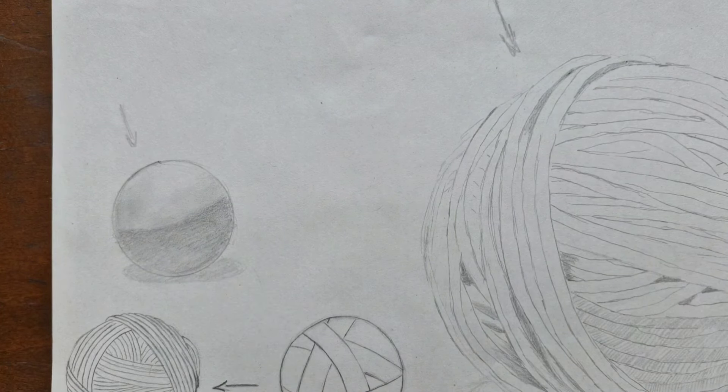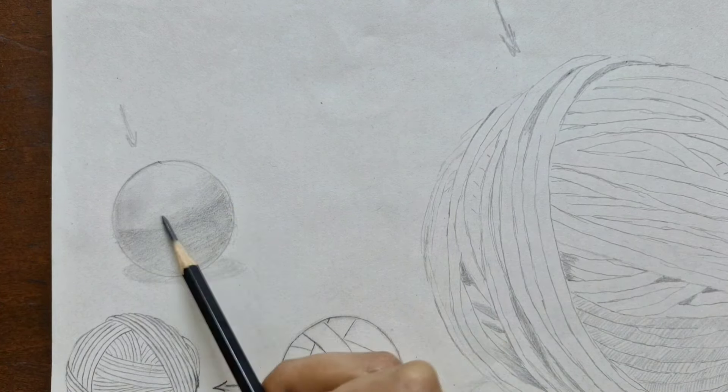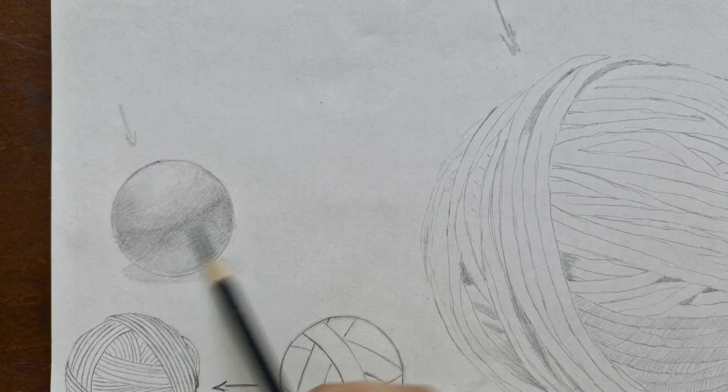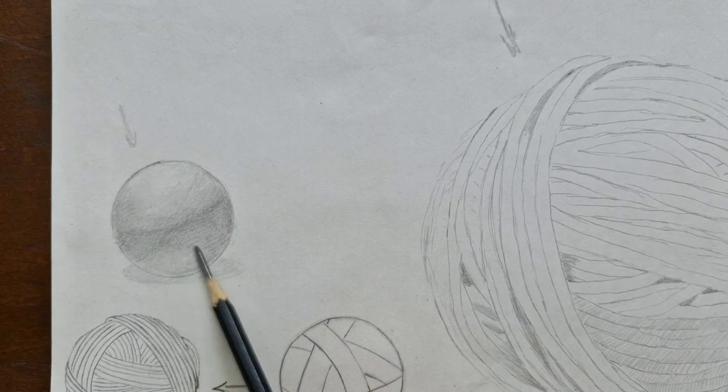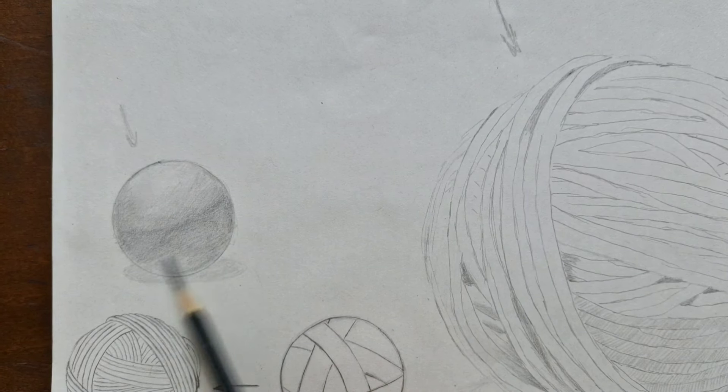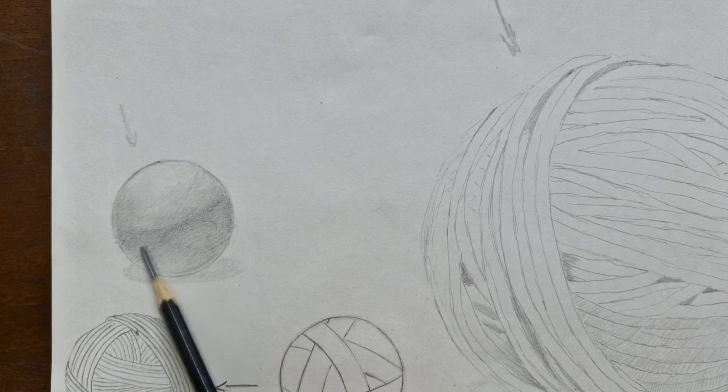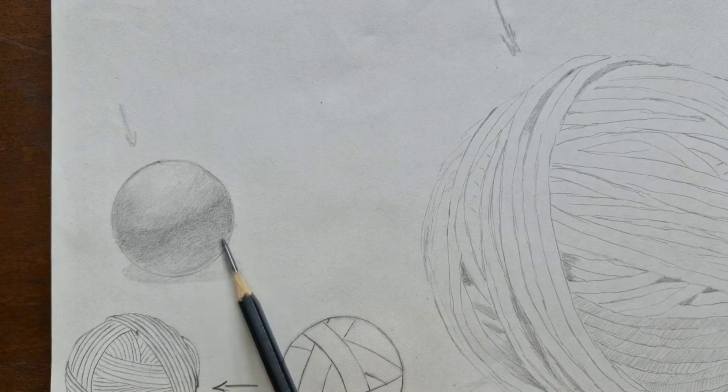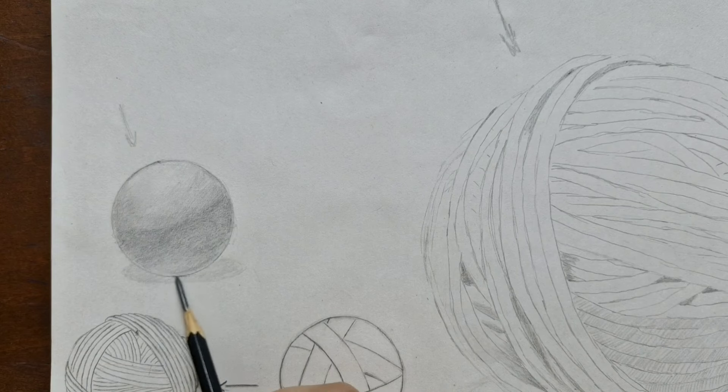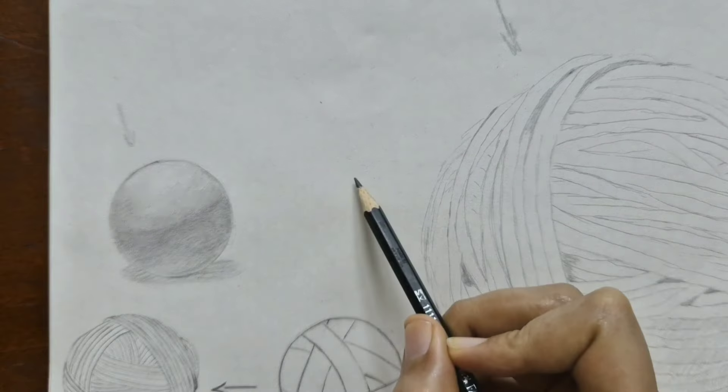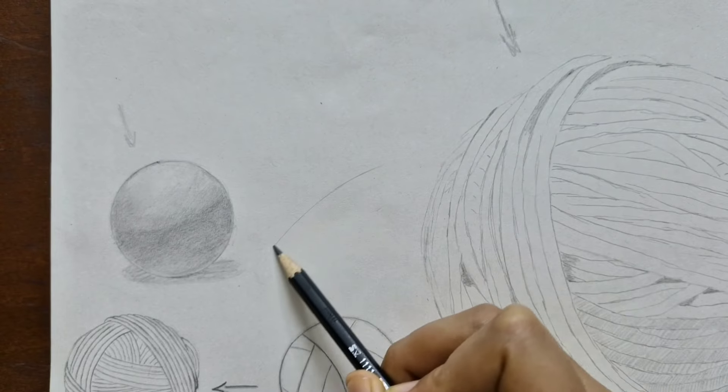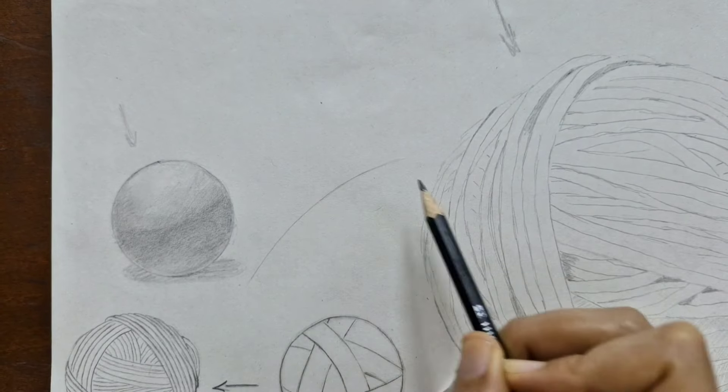Yarn is actually a sphere too. You can use the same shading technique for your yarn. Think about the light source and where the shadows would fall. Keep the transition smooth and you'll get a really nice effect. If this all feels a little overwhelming check out the link above. It's a great tutorial that explains the basics of shading. Then you can come back to this video and finish your yarn drawing.